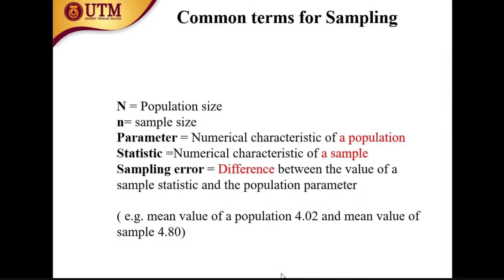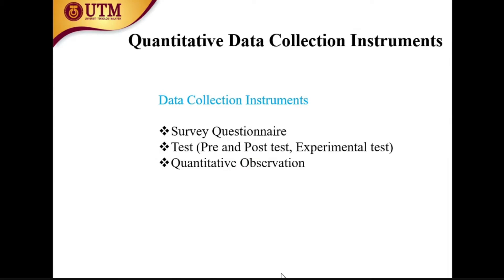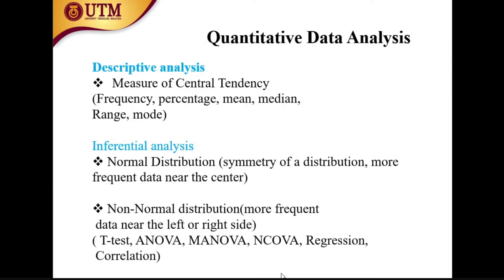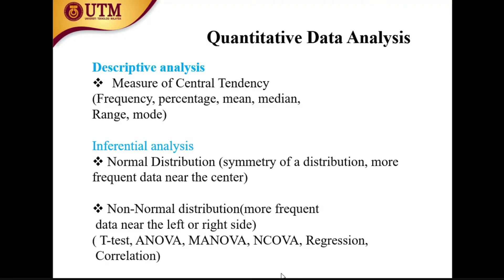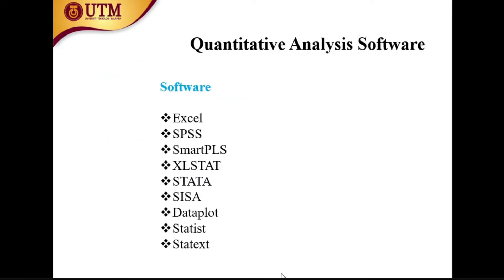Quantitative data collection tools include survey, test, pre-post test, experimental test, and quantitative observation. Quantitative data analysis processes include descriptive analysis — frequency, percentage, median — and inferential analysis: normal distribution and non-normal distribution. Normal distribution relates to symmetry of distribution and more frequent data. Non-normal distribution includes t-tests, ANOVA, MANOVA, and regression. Software for quantitative data analysis includes Excel, SPSS, Smart PLS, ExcelStat, Stata, SAS, data plot, and Statistica.